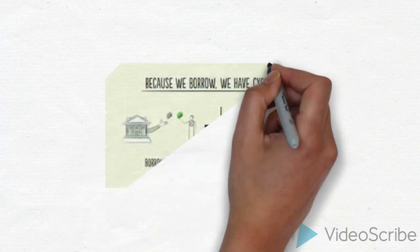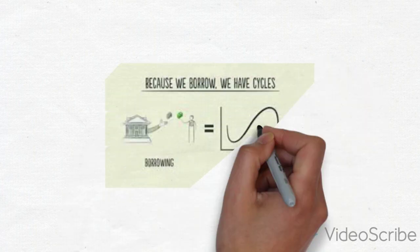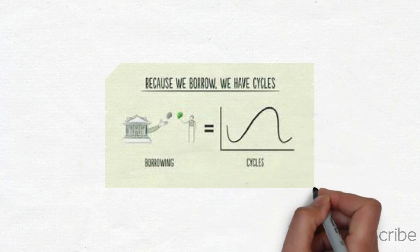Because we borrow, we have cycles. When cycle goes up, it should always comes down.